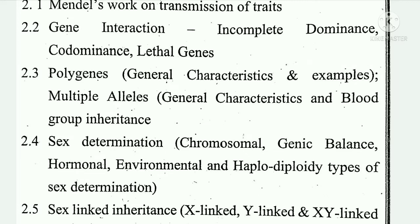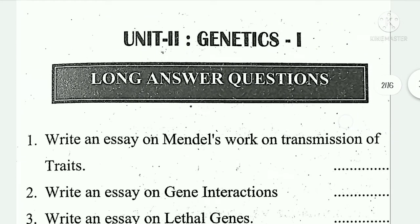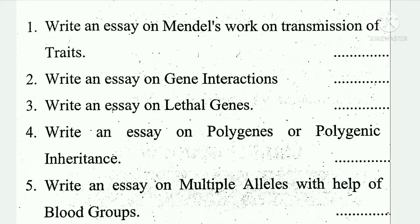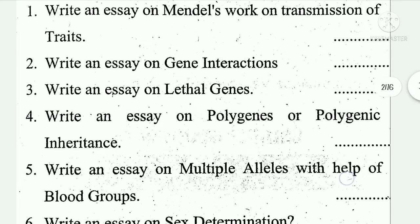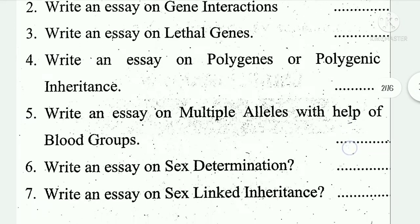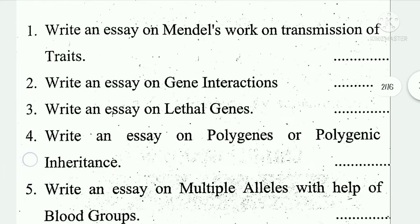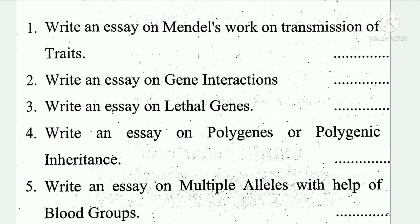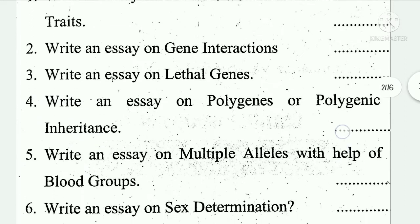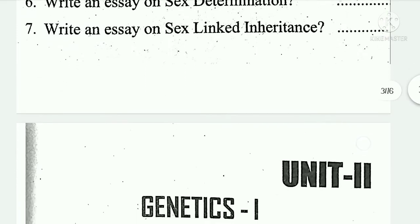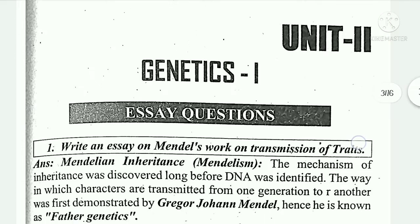Skipping topics 2.4 and 2.5, here are the five most important questions. First: write an essay on Mendel's work on transmission of traits. Second: write an essay on genic interaction. Third: write an essay on lethal genes. Fourth: write an essay on polygenic or polygenic inheritance. Fifth: write an essay on multiple alleles with help of blood groups. Sixth: write an essay on sex determination. Seventh: write an essay on sex-linked inheritance. Preparing these five covers both essays and short answers.